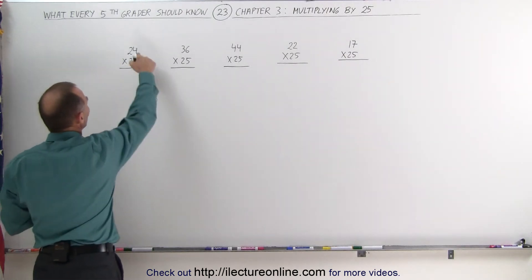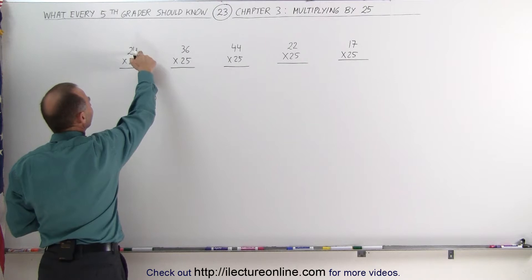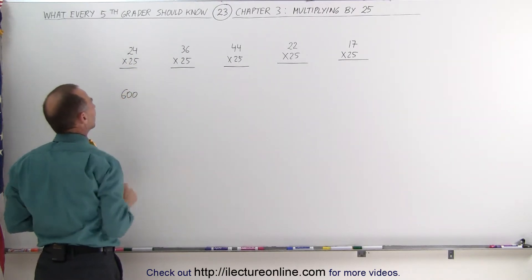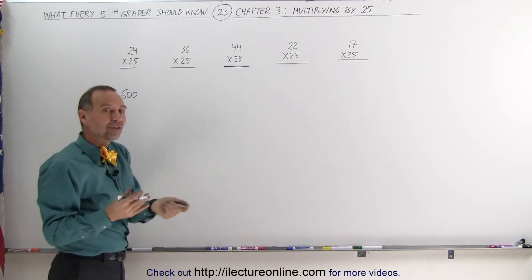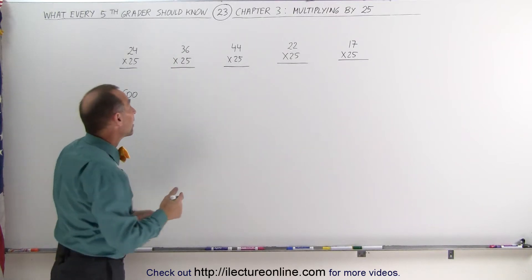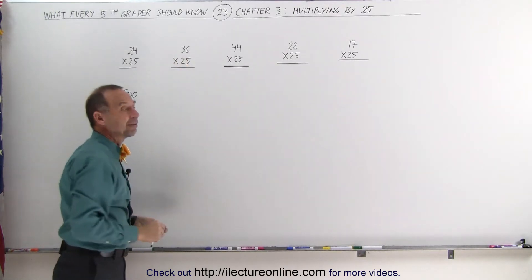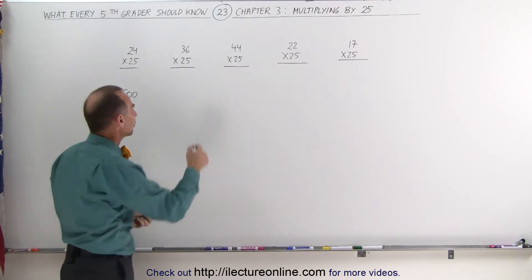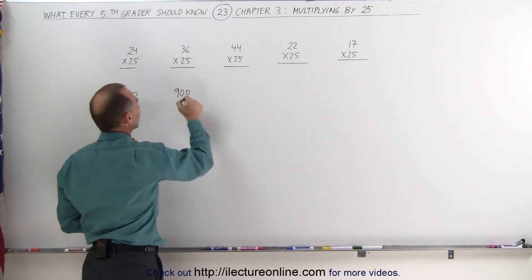Take the number 24, divide it by 4, you get 6, add two zeros, the answer is 600. Same with 36 — 36 times 25: take the number 36 and divide it by 4, you get 9, add two zeros, you get 900.